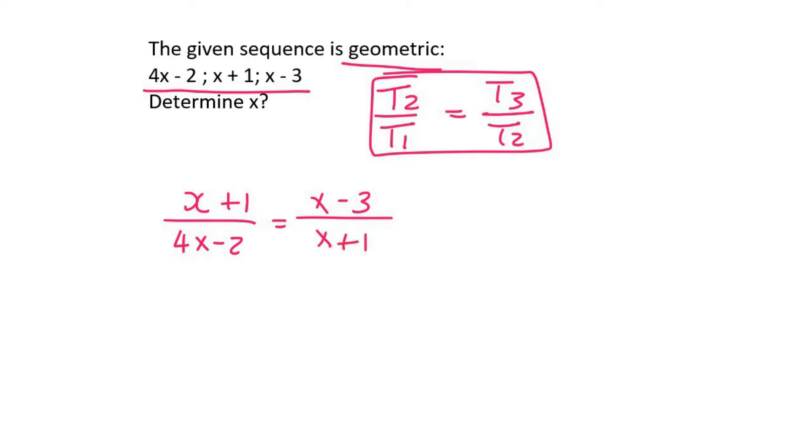Do cross multiplication next. So you end up with x plus 1 times x plus 1 equals to x minus 3 multiplied by 4x minus 2. You see, so what I did there is I just took these numbers across.